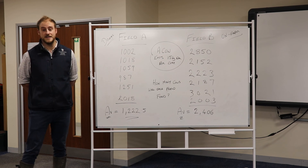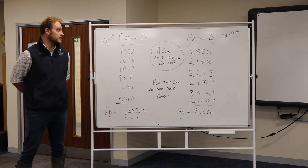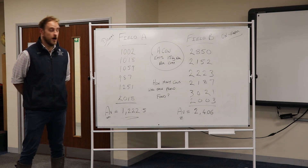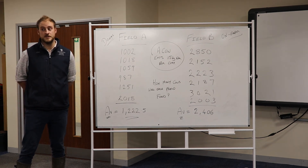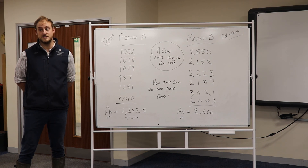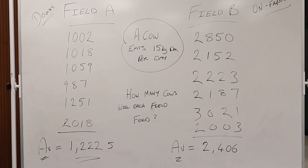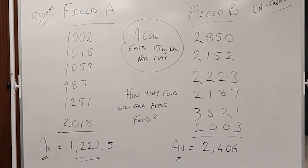So now we have all of our data written up under two field names — field A and field B — we can start our next task, which is to work out the average of these figures. To do this we need to add all of the plate meter readings up. The total comes to 1,222.5 for field A and 2,406 for field B, and that's kilograms of dry matter per hectare, which is the unit we're working in.